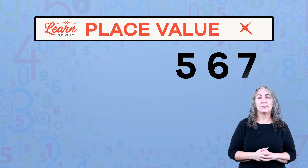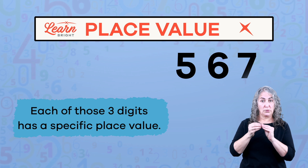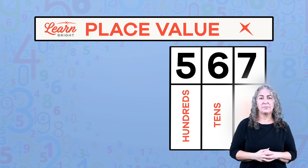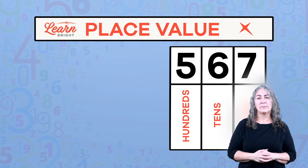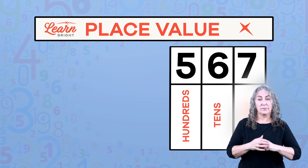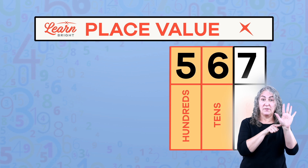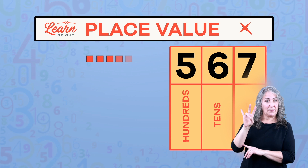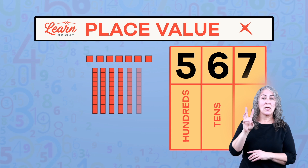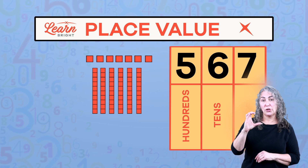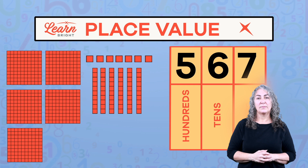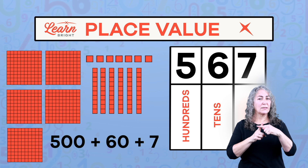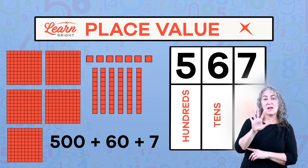Let's look at a number with three different digits. This number is 567, and each of those three digits has a specific place value. Let's slide this number into our chart. There are seven ones, which equals seven; six tens, or sixty; and five hundreds, or five hundred. You can also think of this number as five hundred plus sixty plus seven, or 567.